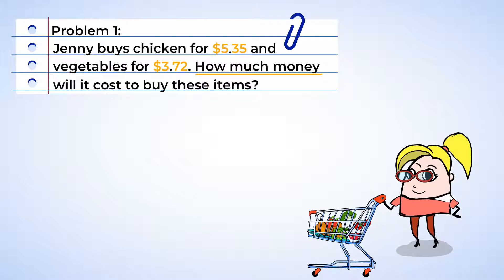Well, let's start with estimating so we know about how much Jenny will spend. When we round $5.35, we round it down to $5. And $3.72 can be rounded up to $4. And 5 plus 4 is 9. So we can estimate that Jenny will spend about $9.